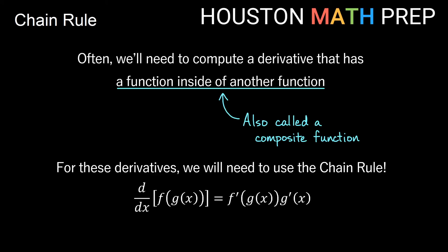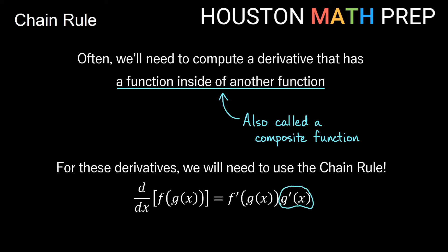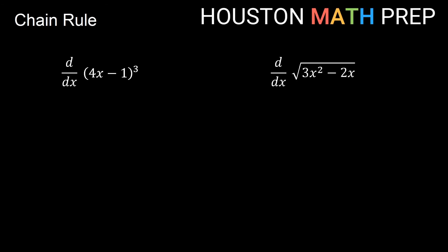The chain rule says that if I take the derivative with respect to x of f of g of x — where the function g is inside of the function f — that derivative rule is going to be f prime of g of x times g prime of x. So notice we've taken the derivative of f but left the function g inside of it, and then we multiply by the derivative of what's inside — that gives us the g prime part of our formula. Let's look at some examples.